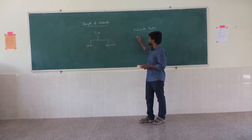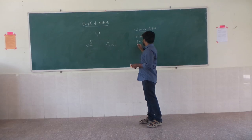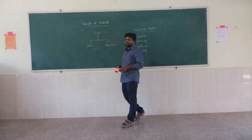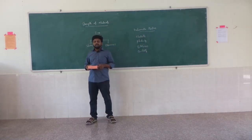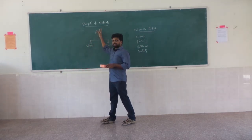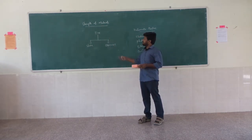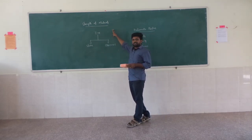In this strength of materials course, let us know the basic definitions: elasticity, plasticity, brittleness, and ductility. As the name itself indicates, strength of materials means that if you are applying a force on the body, it will be resisting some force. That is nothing but strength of materials, which will be analyzed on different materials like steel, concrete, aluminum, brass, or other materials.